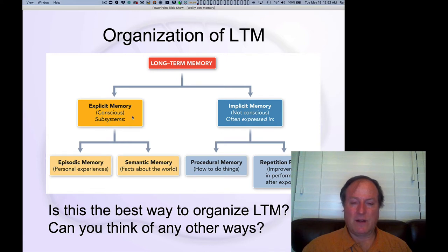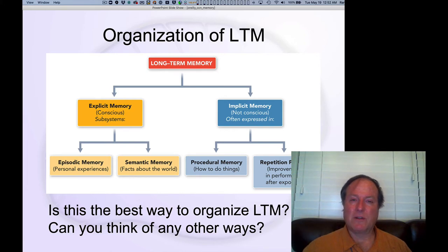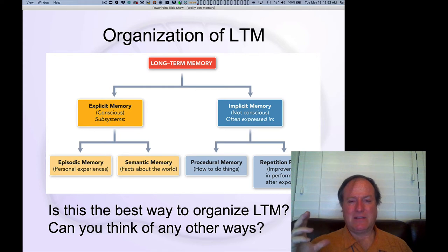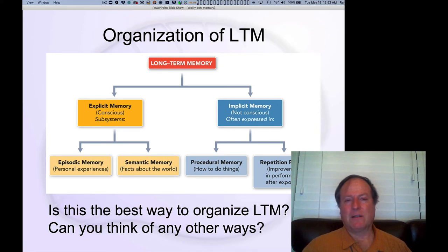Right here at the top, if we think about the difference between explicit memory and implicit memory, that's fundamentally about consciousness. So we're putting consciousness right into the front-line, most high-level division of our memory systems. Consciousness is not uniquely associated with a particular brain area or mechanism, so it's a little bit dicey to make that such a pillar of how we organize memory systems.